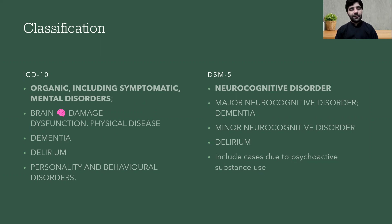In DSM-5, these disorders are classified under neurocognitive disorders, which include major neurocognitive disorder — which is dementia — minor neurocognitive disorder, which includes the amnestic syndrome, and delirium.